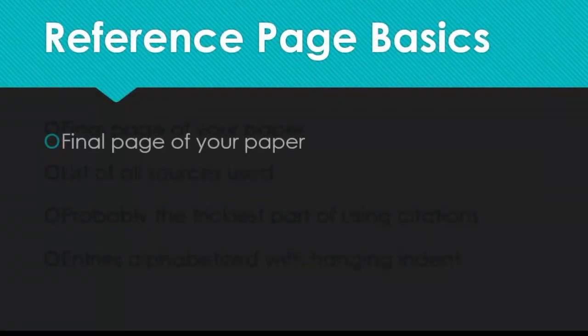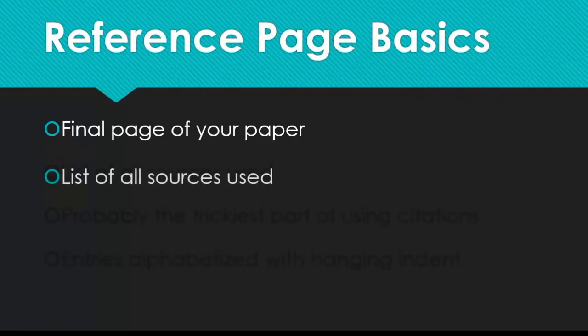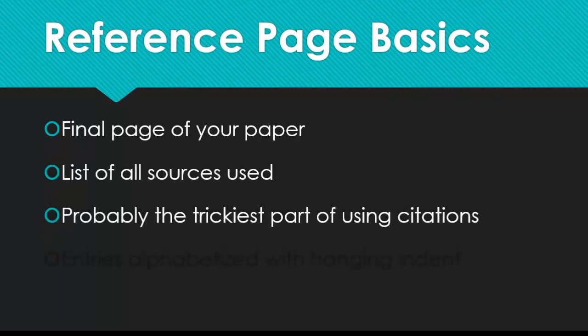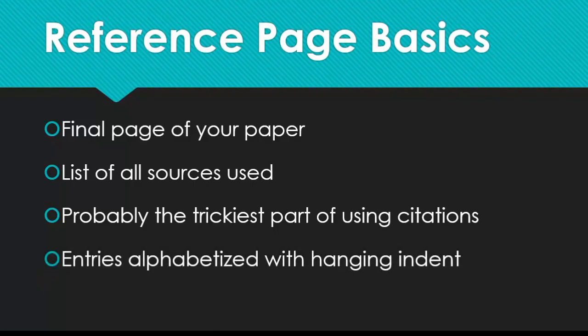At the end of your research paper, you want to include a list of every source you used while writing it. In APA, this is called the references page. This is probably the most complicated part of APA style, because each type of source will include different information, and depending on your instructor, you'll want to pay careful attention to little things like which parts are italicized and where all the commas go. Your APA reference entries will appear in alphabetical order by the first piece of the citation, and every citation will have a hanging indent, or every line but the first will be indented.